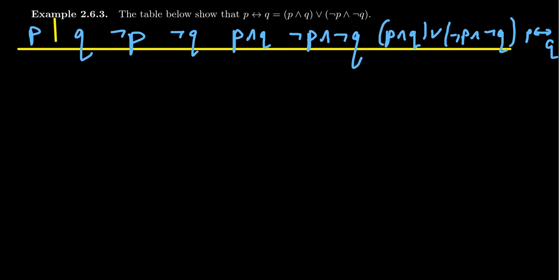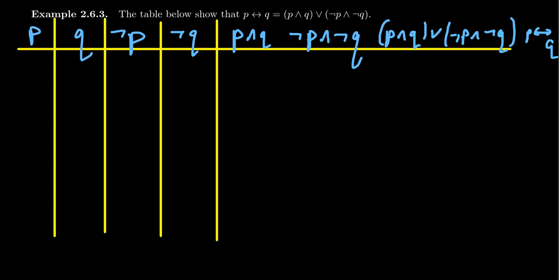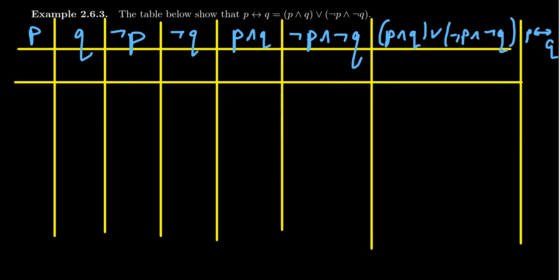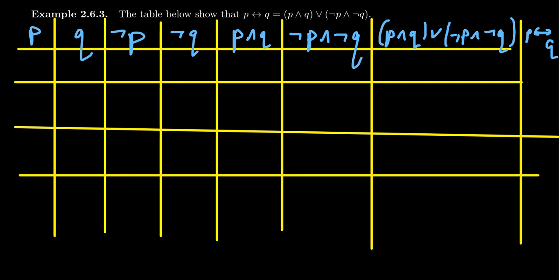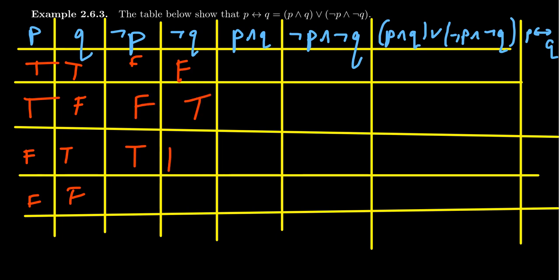Drawing our table — you don't have to make it look perfect, but try to make something organized. We need four rows. The four possibilities for P and Q are: true-true, true-false, false-true, and false-false. Negation switches things, so not P and not Q are: false-false, false-true, true-false, and true-true.